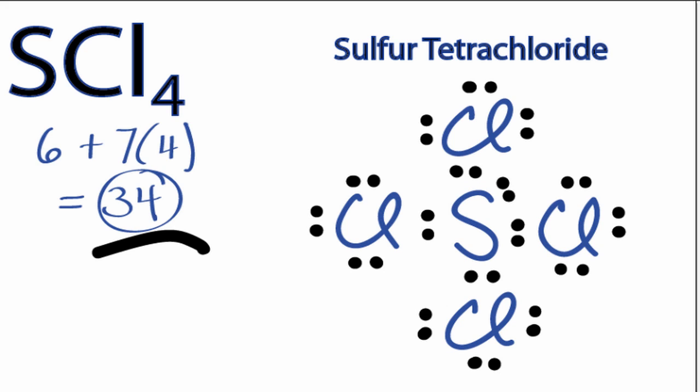The octets are satisfied for the chlorines, and sulfur has 10 valence electrons around it, but that's okay because it's in period 3.